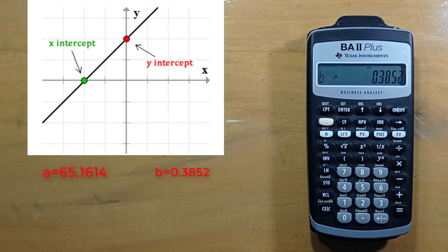So we can write our regression equation as y equals 65.1416 plus 0.3852 x.